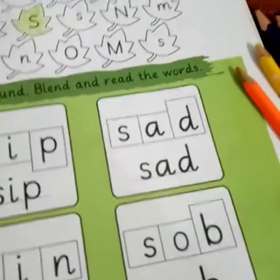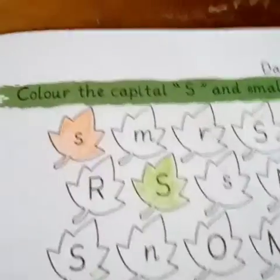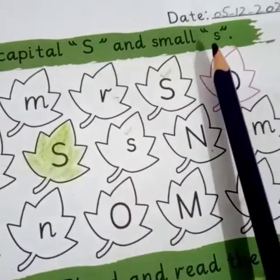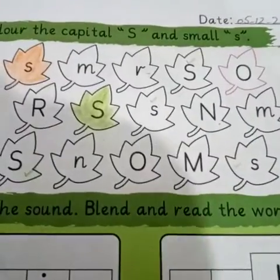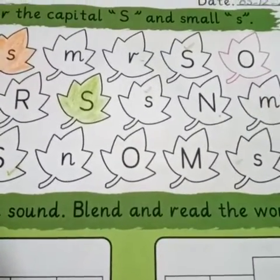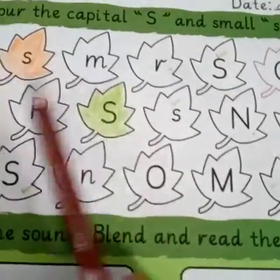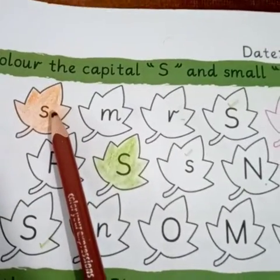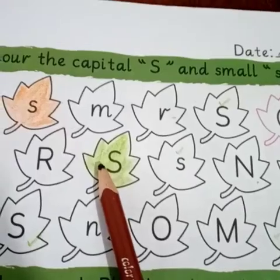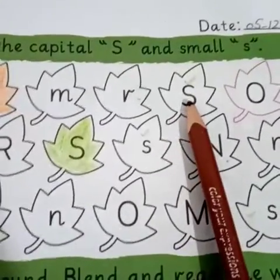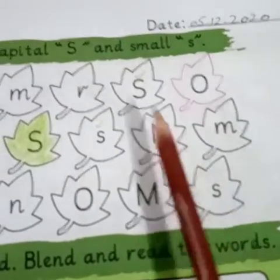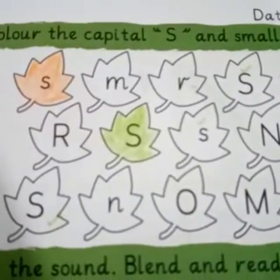Now move ahead. We can see page number 44. The heading here is 'Color the capital S and small S.' We can see that letters are written on leaves: S, M, R, S, O. According to our heading, we will fill colors in those leaves which have the letter S — capital S or small S.